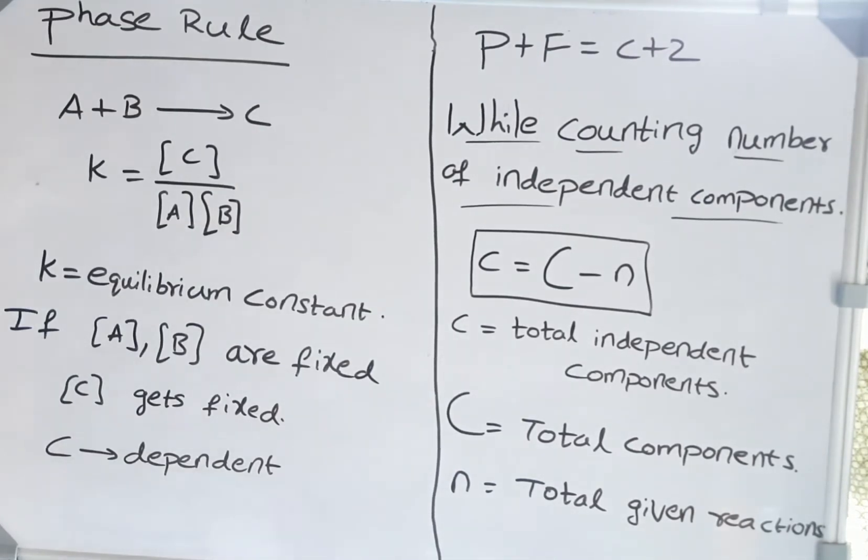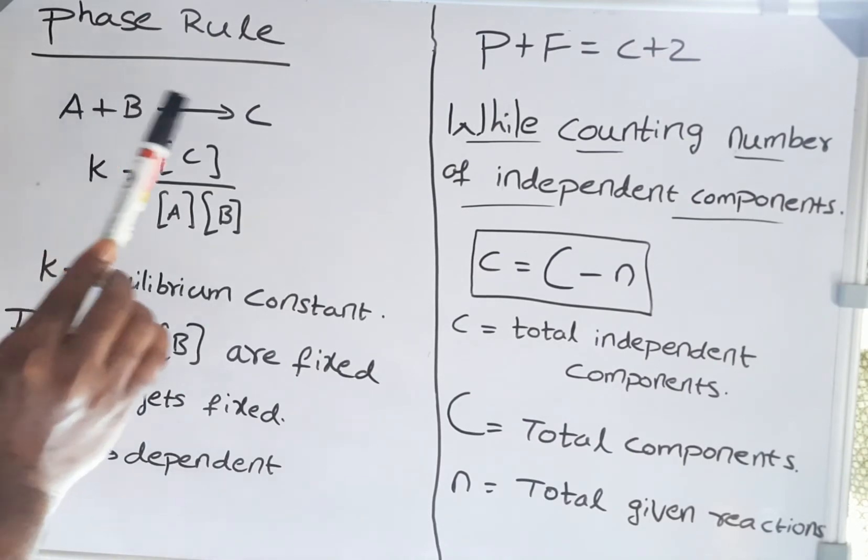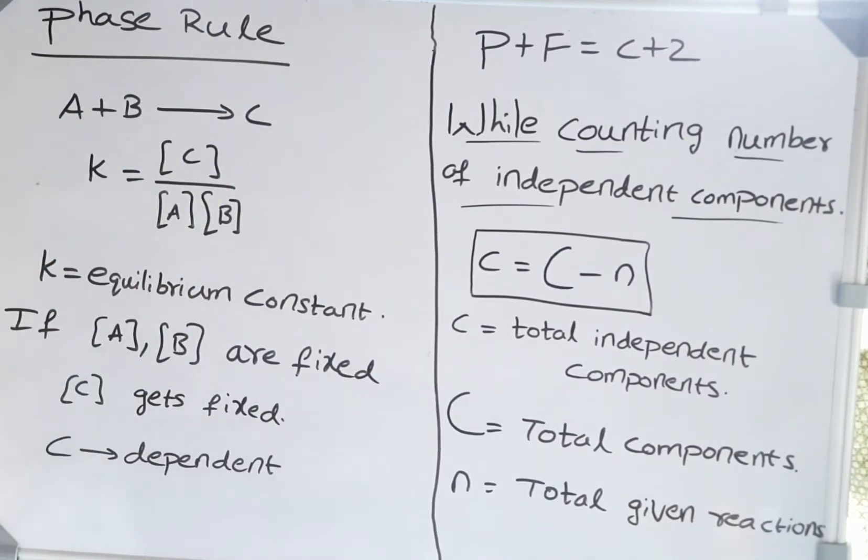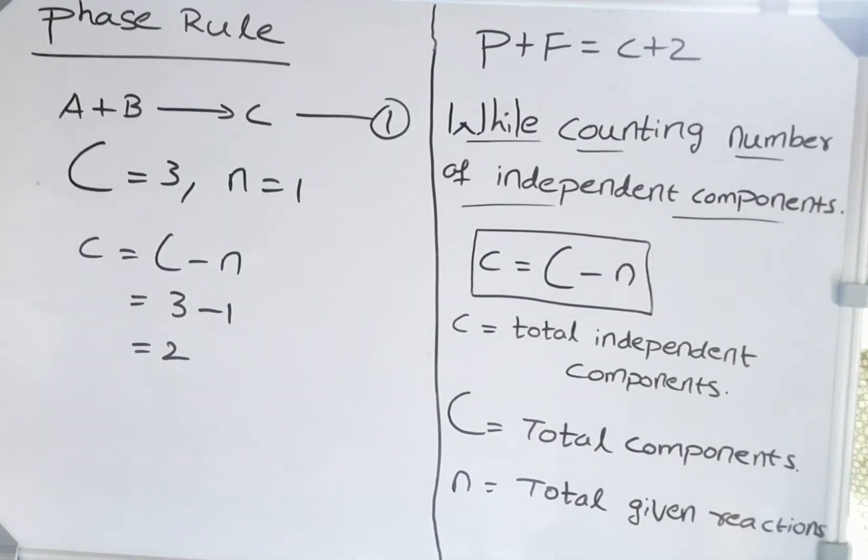Consider a reaction A + B → C. We have a total of 3 components: A, B, and C. We can write the equilibrium constant as K = [C]/[A][B]. If we fix A and B, C automatically gets fixed because K is an equilibrium constant. So if we fix 2 components, the third becomes dependent. Therefore, if total components are 3, independent components are 3 - 1 = 2. In this reaction, we have only 2 independent components.